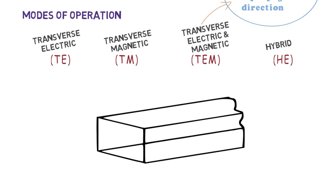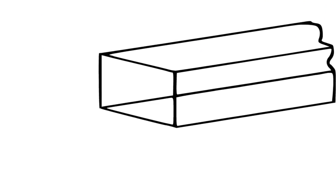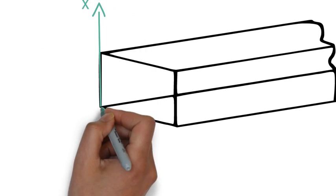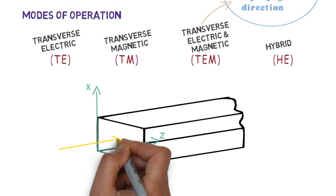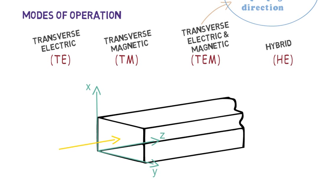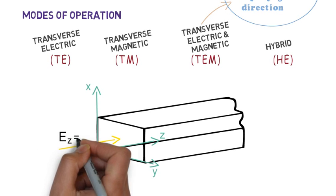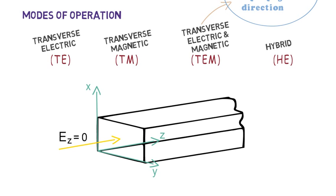Let's consider we have a rectangular waveguide. Draw all the three axes on the three different edges of it. So here wave will propagate in positive z direction. If electric field in z direction is zero and exists only in x and y direction then this is called transverse electric mode.